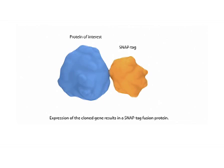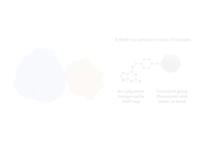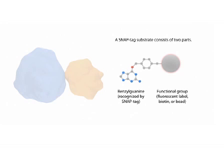Expression of the cloned gene results in a SNAP-TAG fusion protein. The SNAP-TAG substrate consists of two parts: the benzylguanine, which is recognized by the SNAP-TAG, and the functional group.